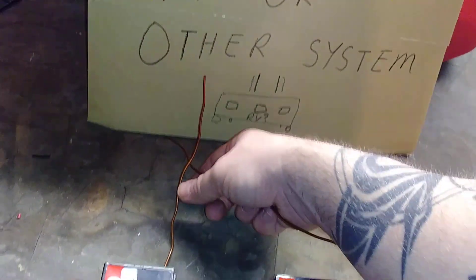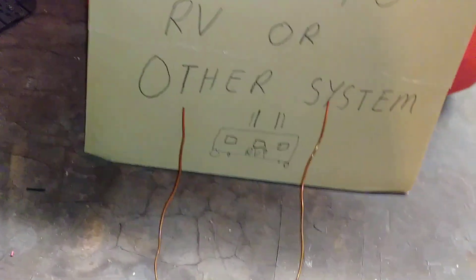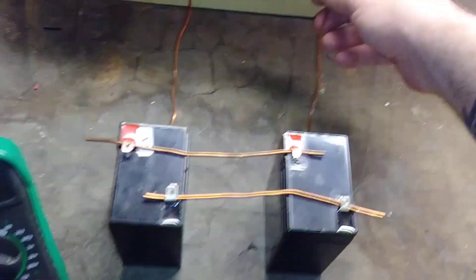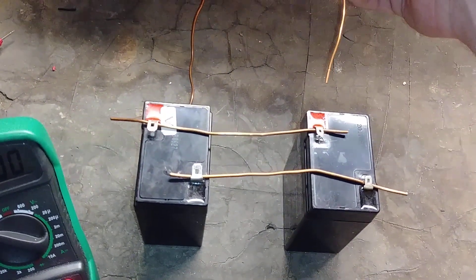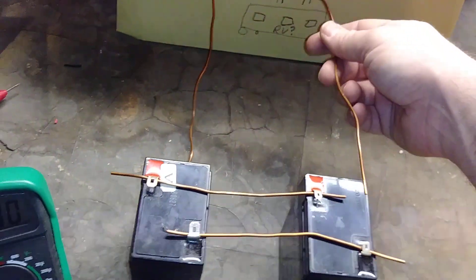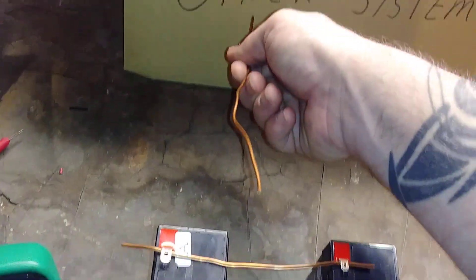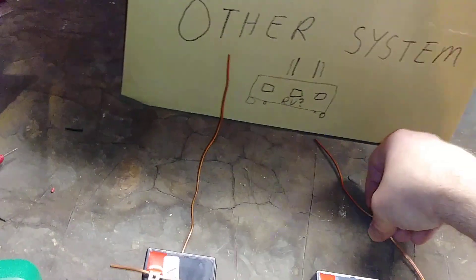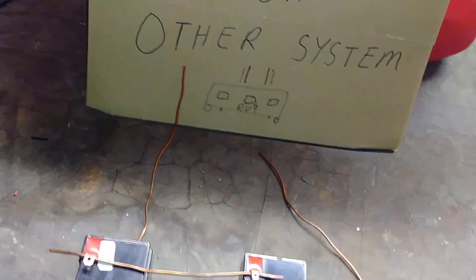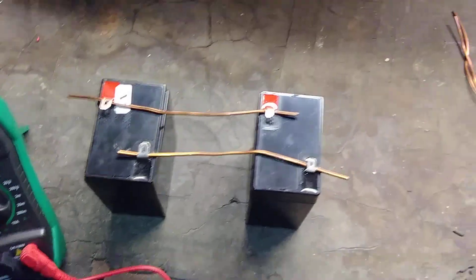From there that's where you would have these two connections going to an RV or other system. The connections would be different but you would have the positive going to the positive on the RV from one battery, and then the negative going to the negative on the RV, as long as the RV was taking six volts.